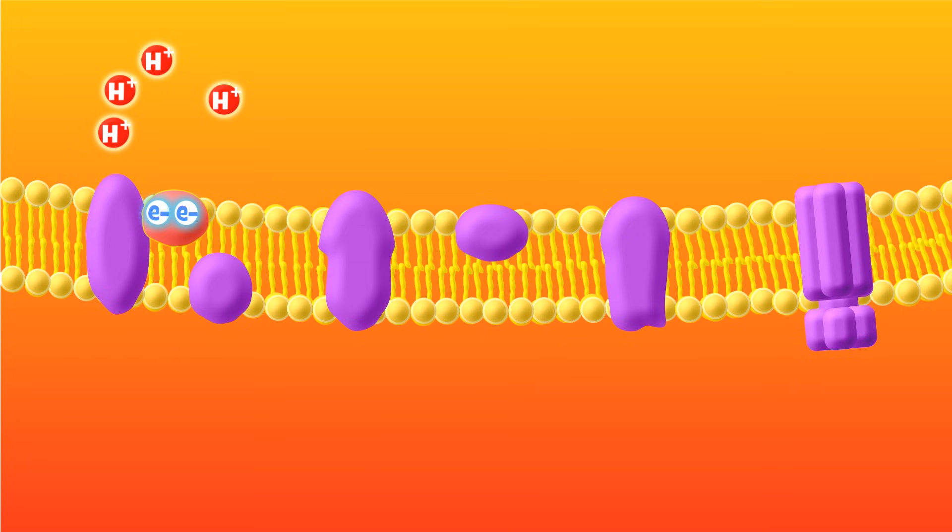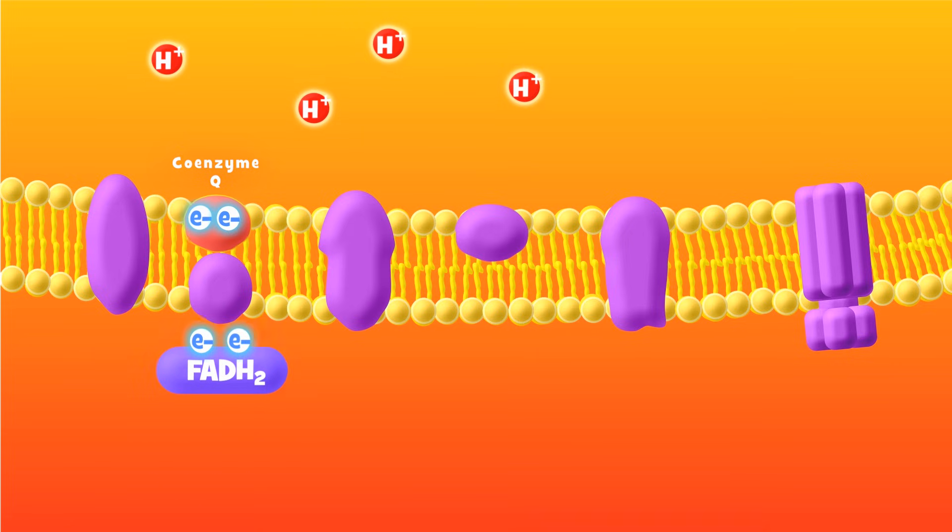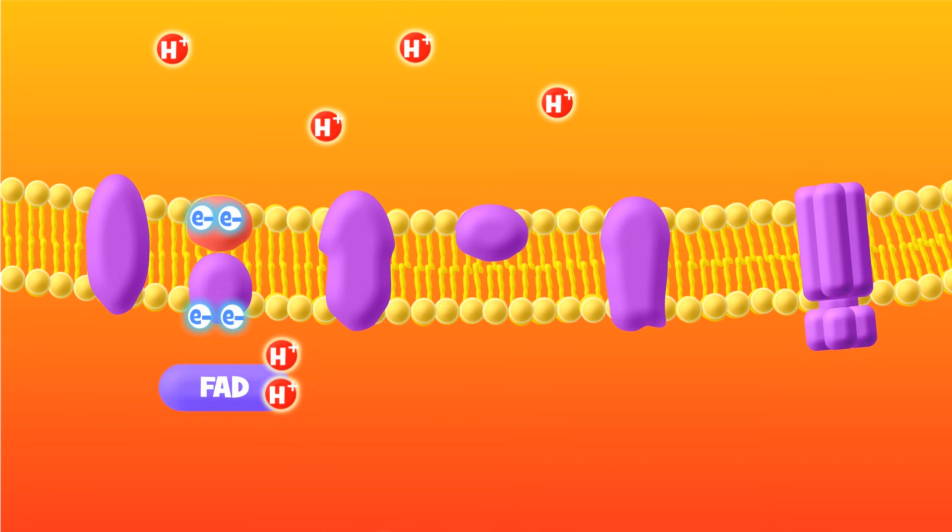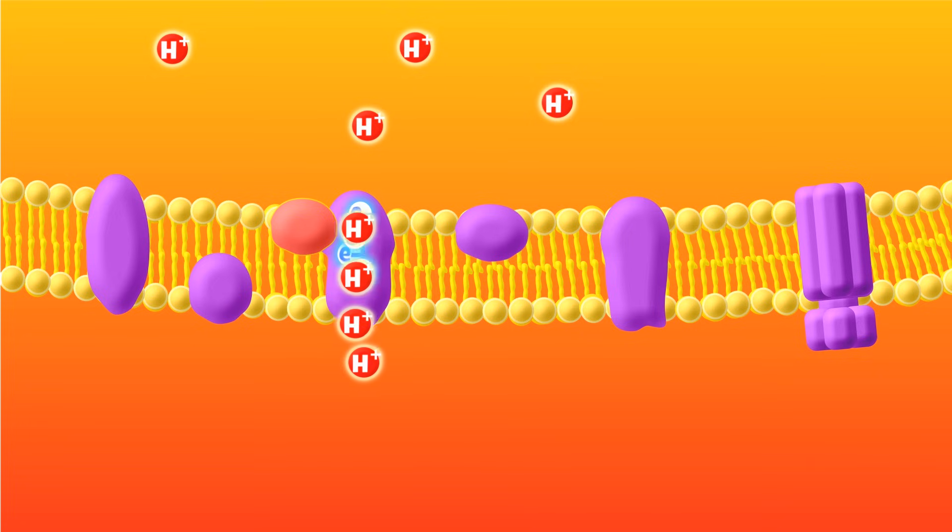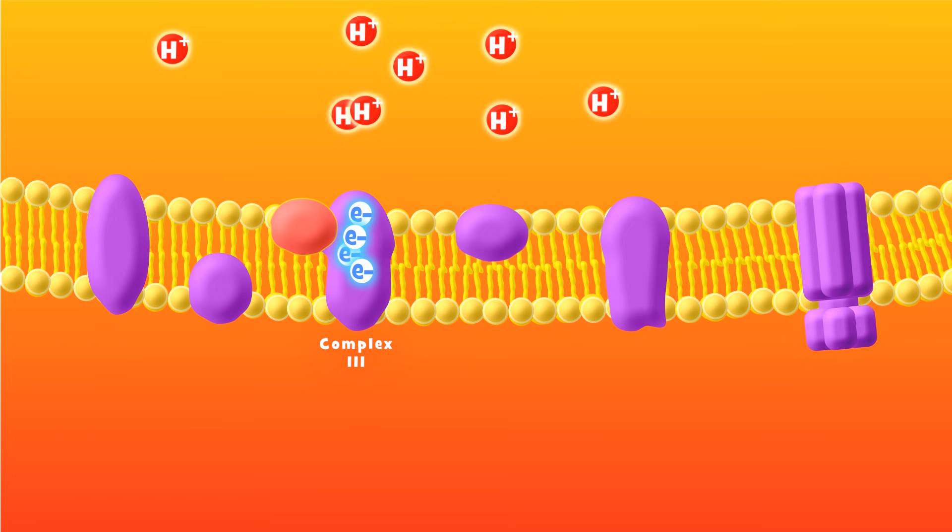The electrons are then transported by this special red molecule toward their next destination. The red molecule also picks up the electrons donated by FADH2, that other electron carrier that we made during the Krebs cycle. All of these electrons are then passed on to another protein complex. At this next protein complex, the electron energy is used once again to transport hydrogen ions across the membrane into the intermembrane space.